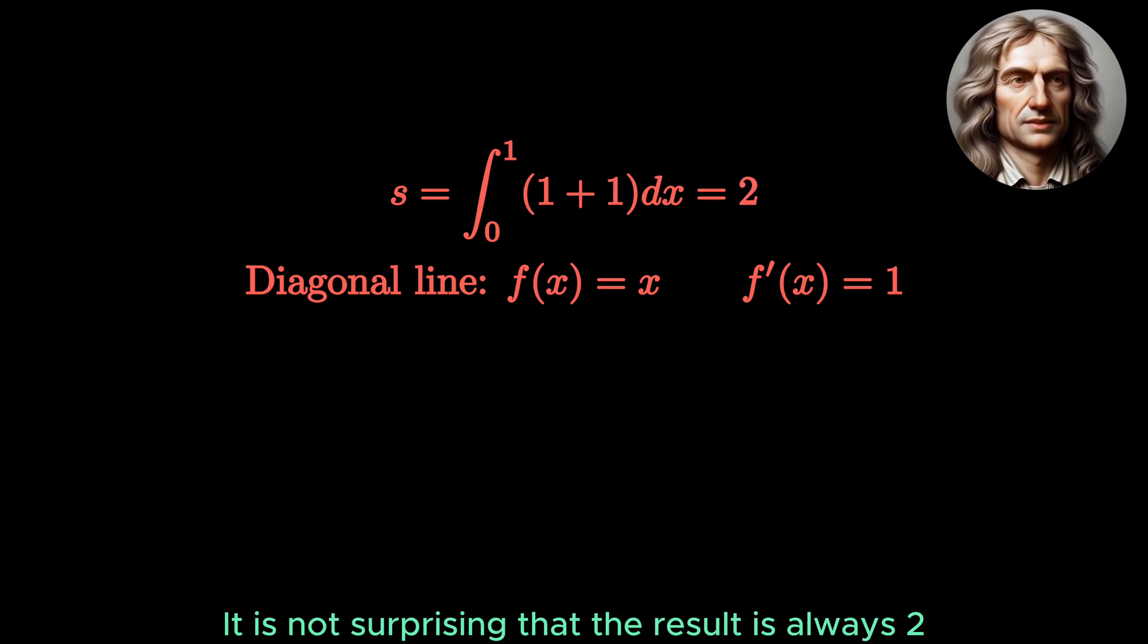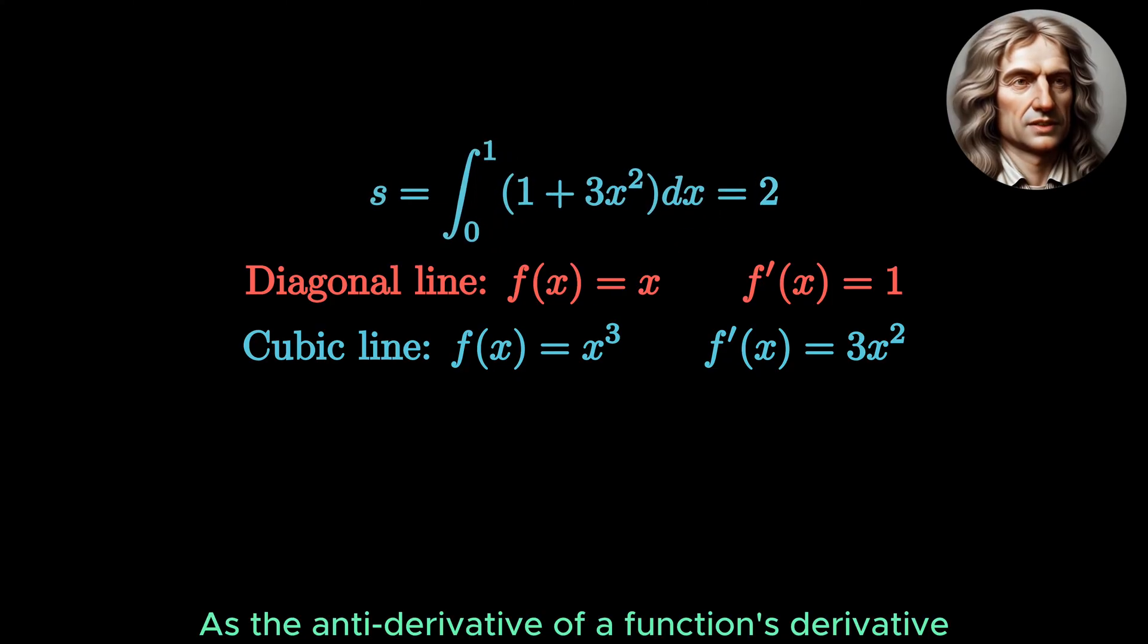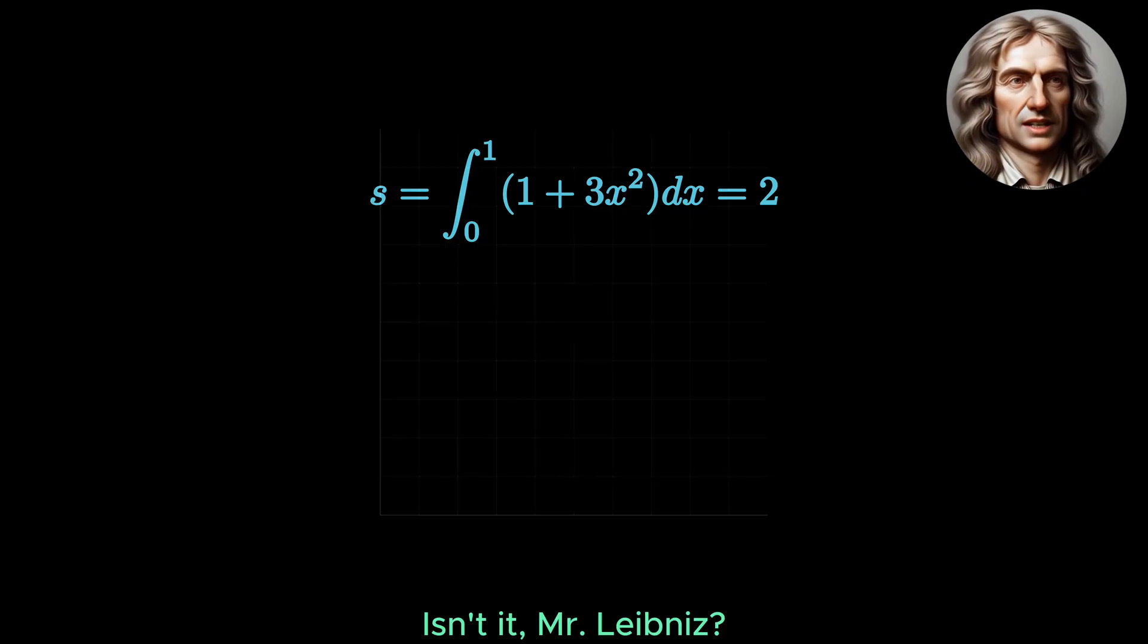It is not surprising that the result is always 2 for any function, as the anti-derivative of a function's derivative is just the function itself, isn't it, Mr. Leibniz?